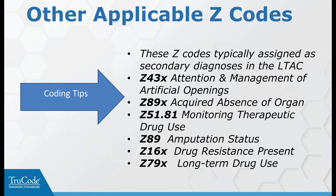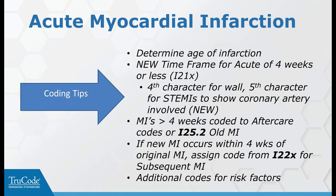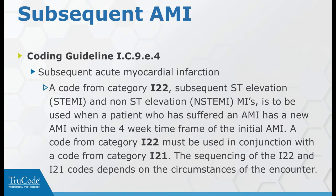A few other Z codes apply to the LTCH setting. For acute MI, the time frame is four weeks or less - not eight weeks as in ICD-9. There is an additional I-22 code if they have a new subsequent MI within that four-week time frame of the original MI, requiring two separate codes. The I-25.2 code is for old MIs. Sequencing of the I-22 and I-21 codes is based on the circumstances of the encounter being coded.